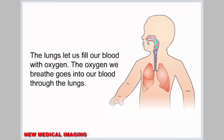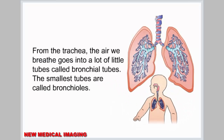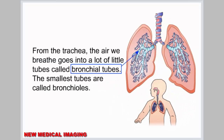The lungs let us fill our blood with oxygen. The oxygen we breathe goes into our blood through the lungs. When we breathe in, the air goes through our mouth and nose and into our windpipe, also called the trachea. From the trachea, the air we breathe goes into a lot of little tubes called bronchial tubes. The smallest tubes are called bronchioles.